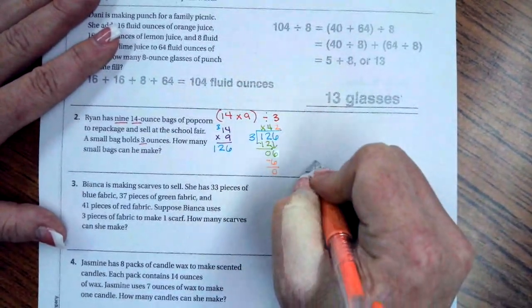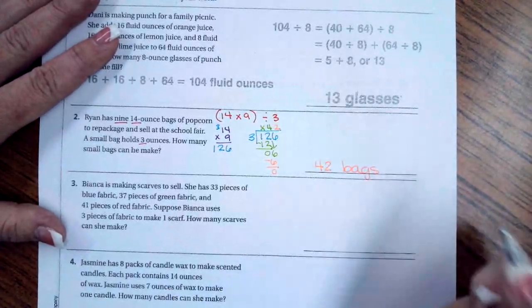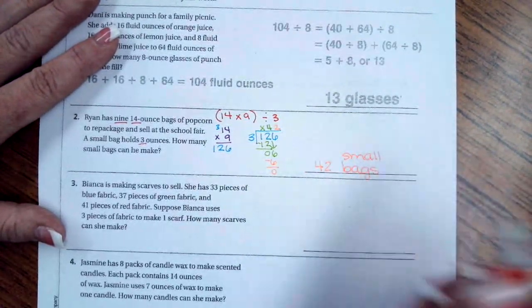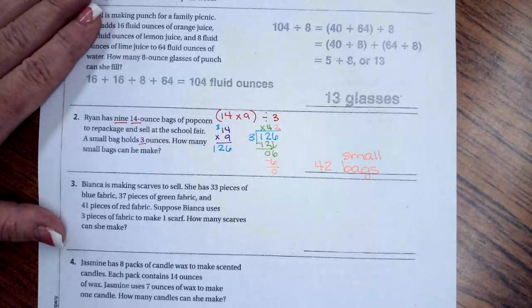So now 42 is my answer. 42 bags. You can write small bags if it makes you feel better because they have the 14-ounce bags and the three-ounce bags. So you can write 42 small bags.